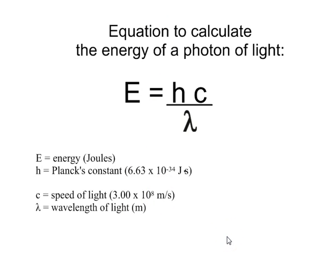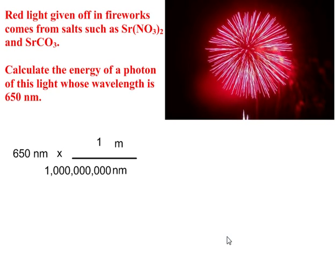So let's try a few problems here. Red light given off in fireworks comes from salt such as strontium nitrate and strontium carbonate. Calculate the energy of a photon of this light whose wavelength is 650 nanometers. Alright, so we're given the wavelength but it's in nanometers. So your first job is to convert nanometers into meters. You're going to use that technique that we learned earlier this year where you're converting metric units. To do that you'll set up a fraction bar. You'll put nanometers in the denominator so that it will cancel with the nanometers unit in your 650 nanometers measurement. Unit of meters will go on the top of this fraction. Since one meter is bigger than one nanometer, we'll put the one next to the meter. And then we'll know that one meter contains one billion nanometers. Nanometers will cancel out. And your math in your calculator is 650 divided by 1 billion and you get 6.50 times 10 to the negative 7 meters.